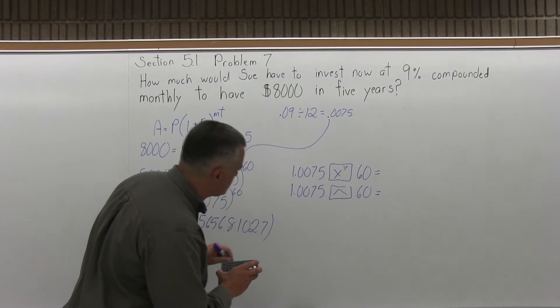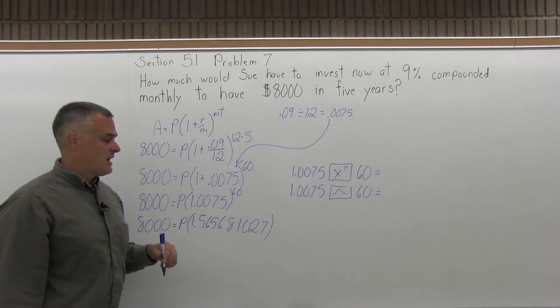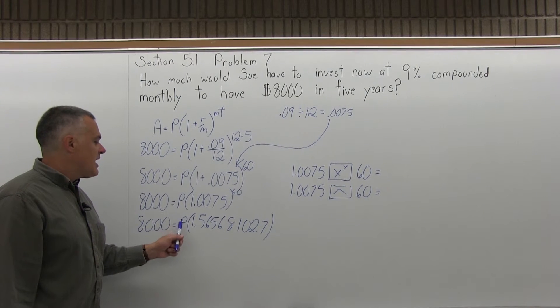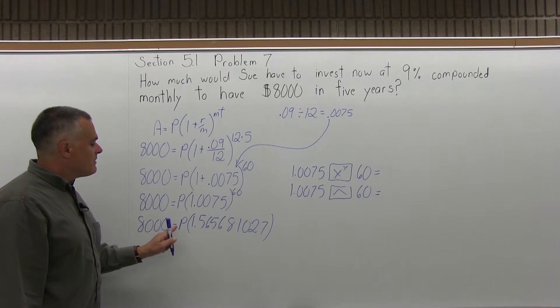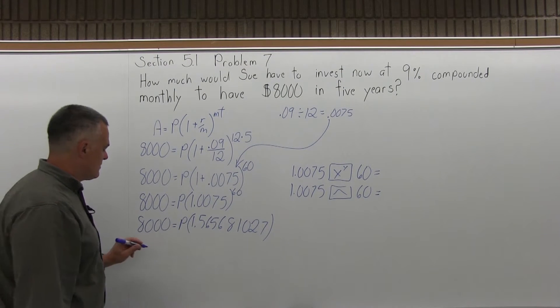So my formula now will say 8,000 equals P times 1.565681027. I'm going to let all those decimals stay in my problem, and I'm just going to round it at the end to two places for how many cents. Now 8,000 equals P times 1.56 blah blah blah, all those decimals. To get P by itself, I want to divide out the 1.56 whatever and isolate the P.